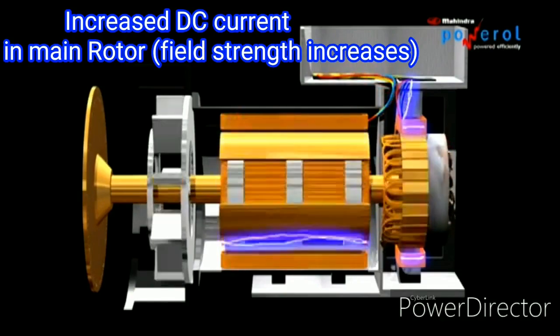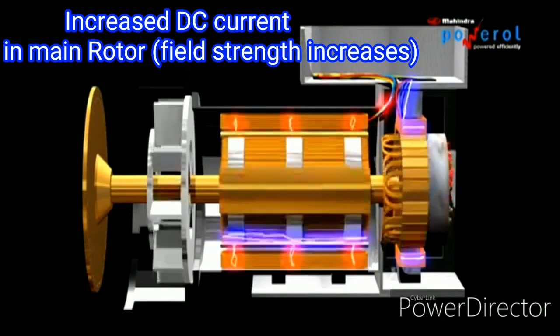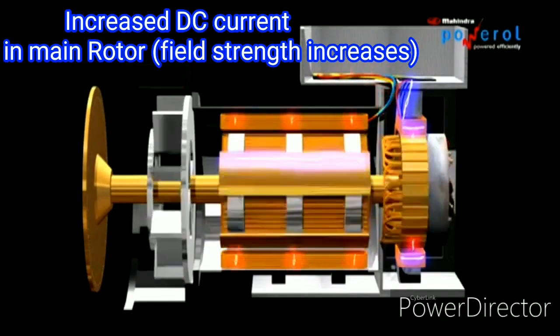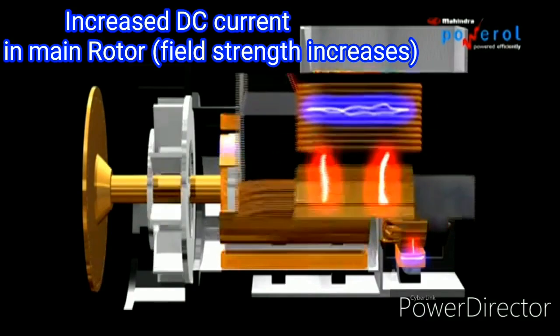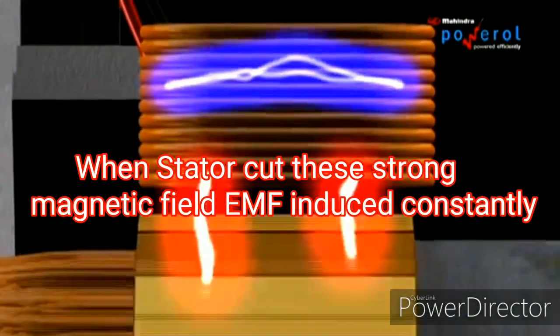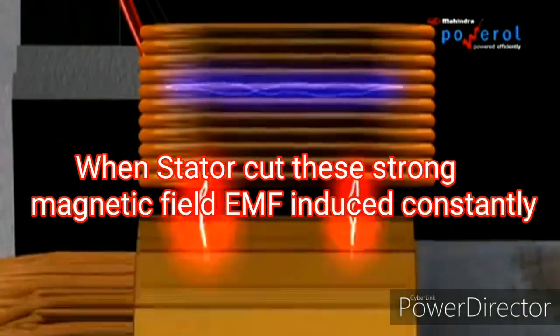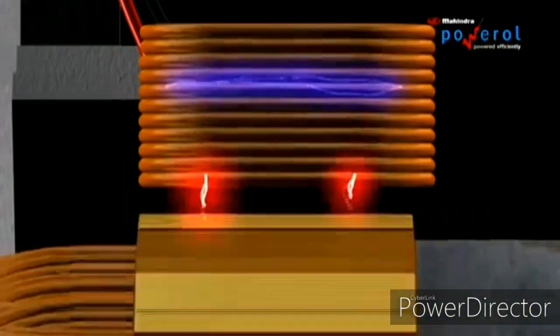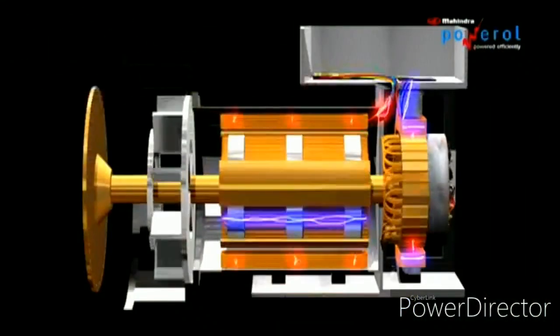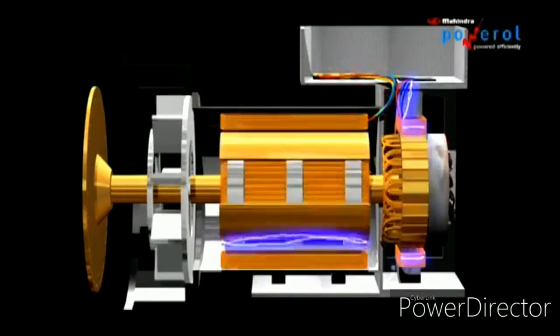The exciter rotor generates the EMF. If you want to maintain a constant voltage on the main stator, you can load a constant voltage. You can increase the excitation current with low voltage to regulate the excitation current.